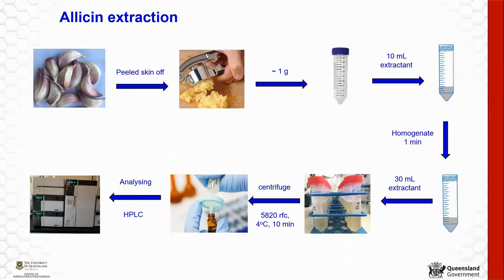To extract allicin, we have developed a very simple and rapid method. We can use fresh garlic, crush it, and extract in deionized water in 20 minutes, then analyze using an HPLC system.